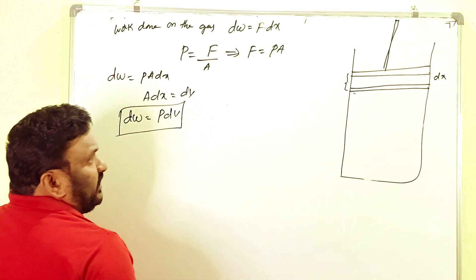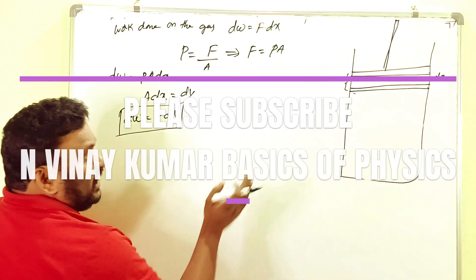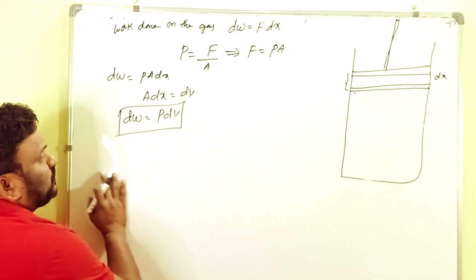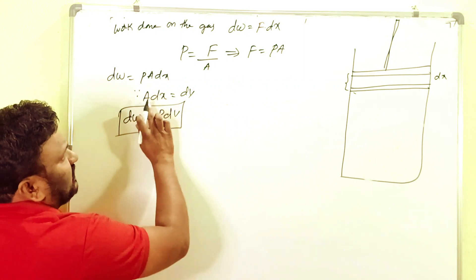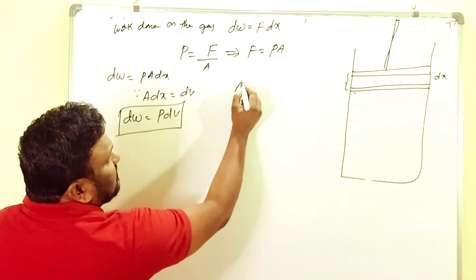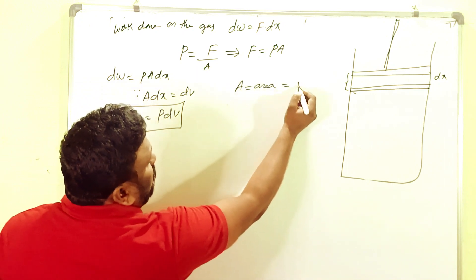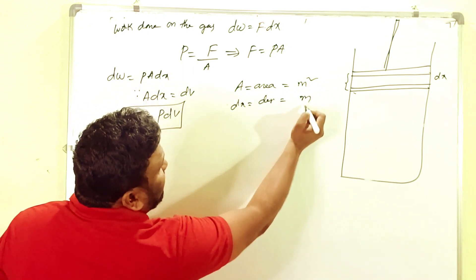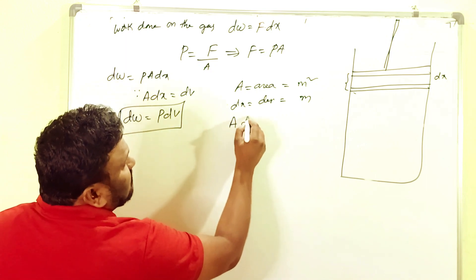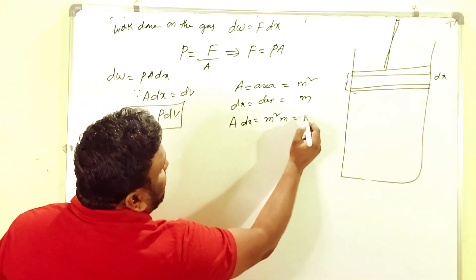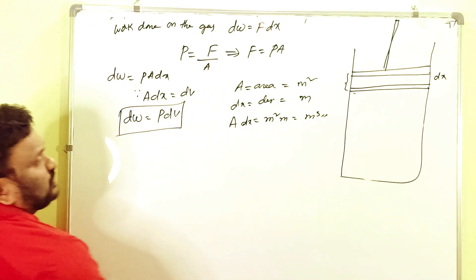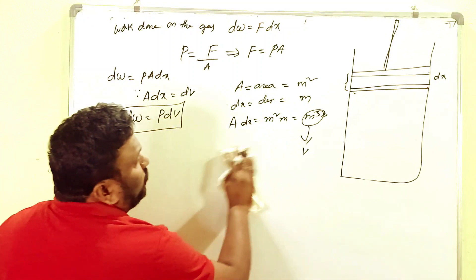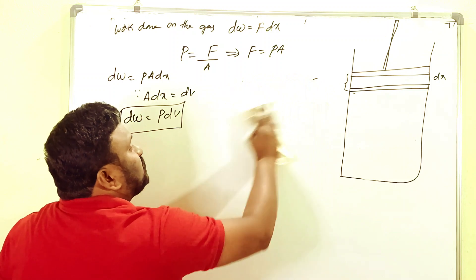If the piston moves down, work is done on the gas; if the piston moves up, work is done by the gas. We can verify that a times dx equals dv: the unit of area is metre squared, and dx is in metres, so a times dx gives metre cubed, which is the unit of volume. Therefore a times dx is simply the change in volume dv. This is equation number one.